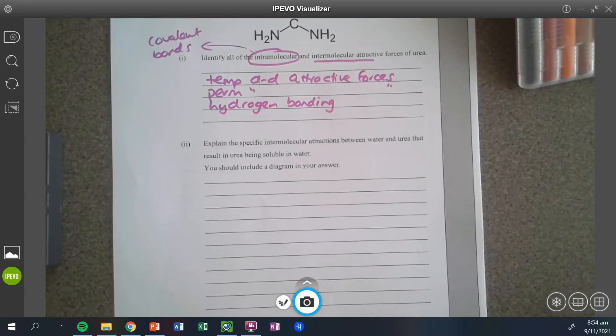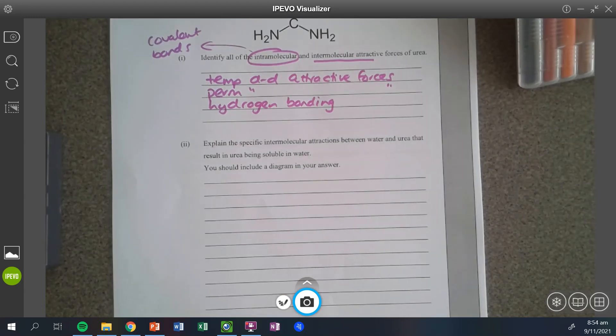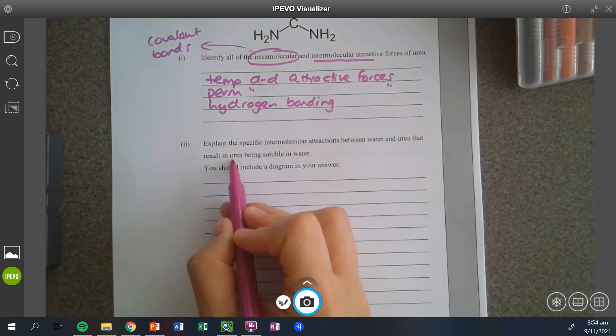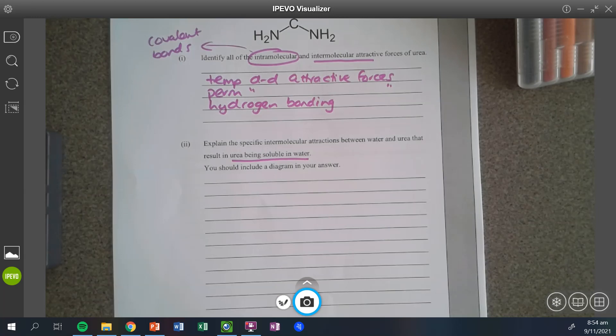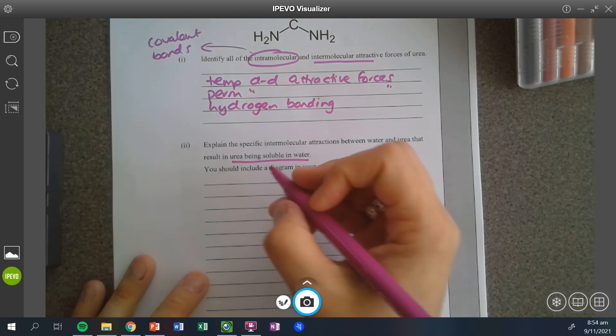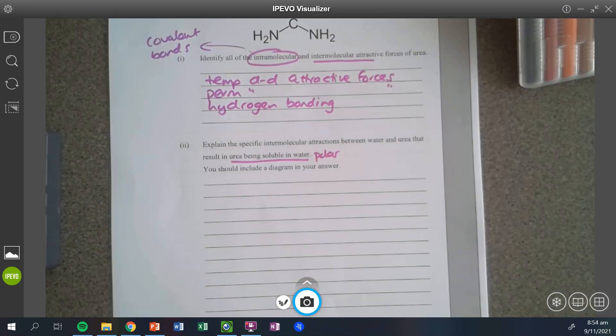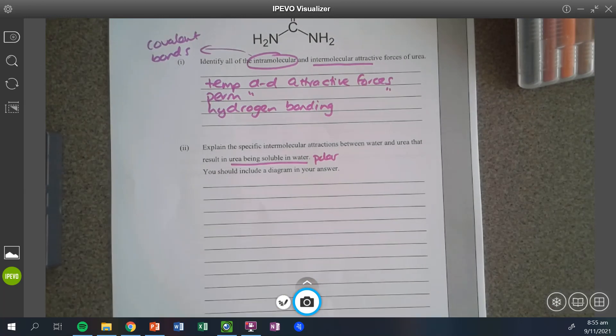Next one here was looking at the specific intramolecular attractions between water and urea that result in urea being soluble in water. So the first thing you guys got to keep in mind, I don't think too many people had this one wrong, but remember that urea is soluble. So you know from that information already that urea is going to be polar. This is actually a throwback to level two because it's a very common level two question asking about water solubility.